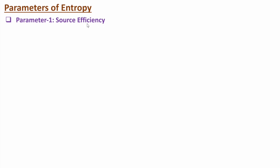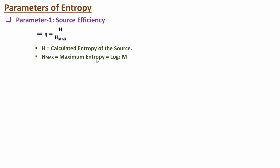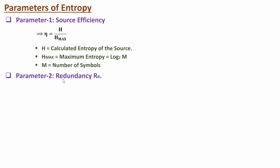Now let me discuss the parameters of entropy. The first parameter is source efficiency, which is H divided by H_max. H is the calculated entropy of the source and H_max is the maximum entropy, which occurs when all symbols have equal probability and equals log base 2 of M. The second parameter is redundancy, which is 1 minus efficiency. Efficiency ranges from 0 to 1, or 0% to 100% when multiplied by 100.